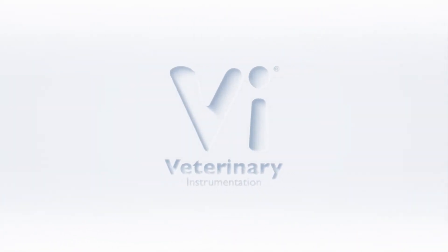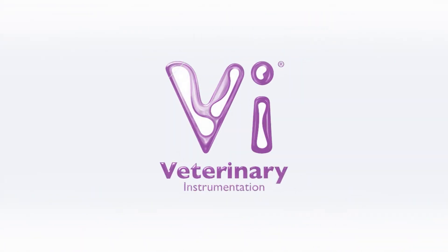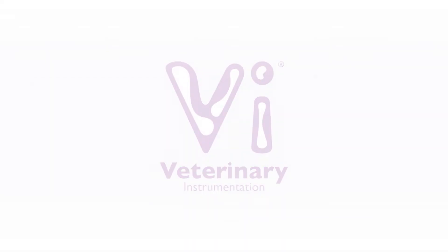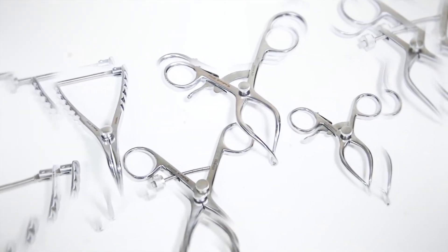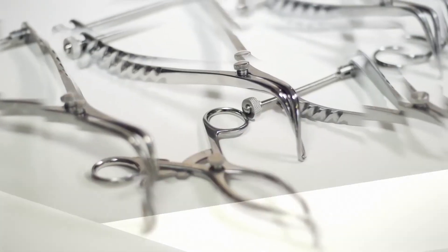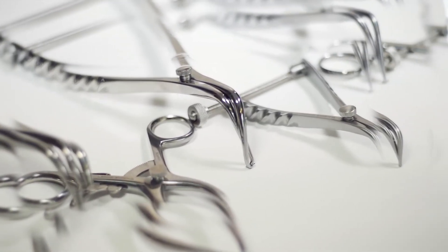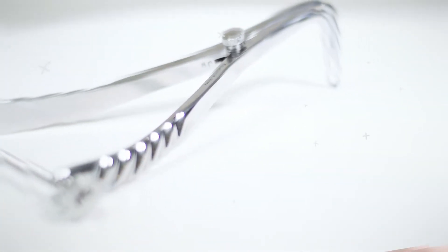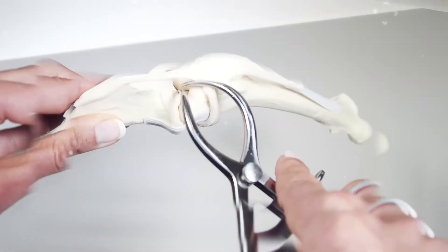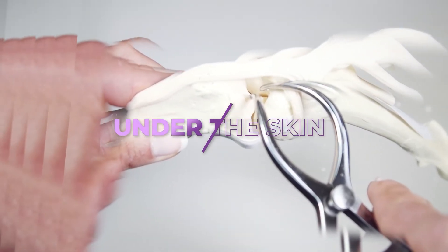Hello and welcome to Veterinary Instrumentation's latest episode of Under the Skin, a videography series introducing key devices used during orthopedic surgery. In this episode, we will be focusing on an important instrument used during joint surgery, the stifle distractor. So, let's go under the skin.